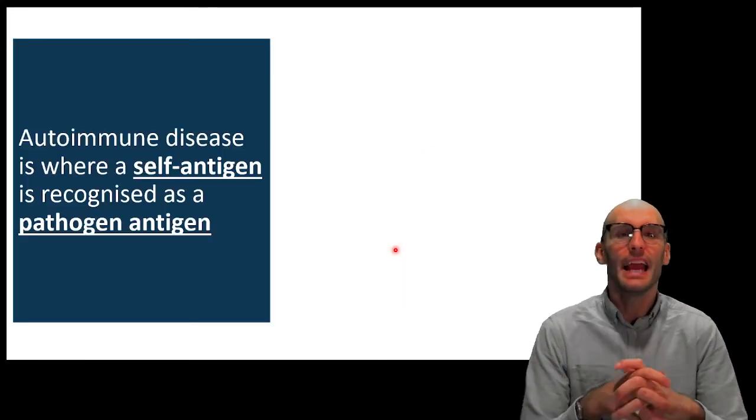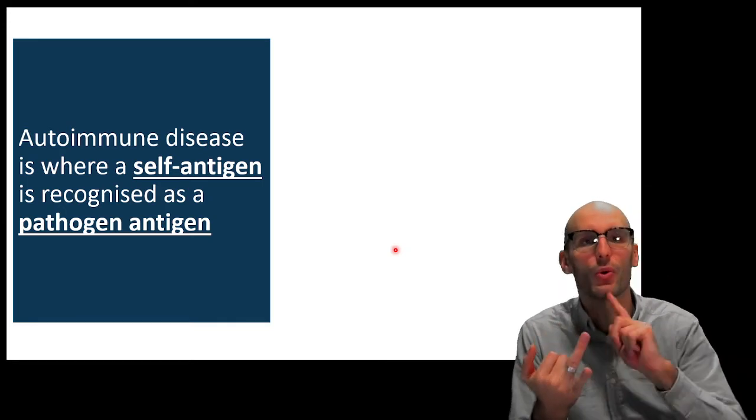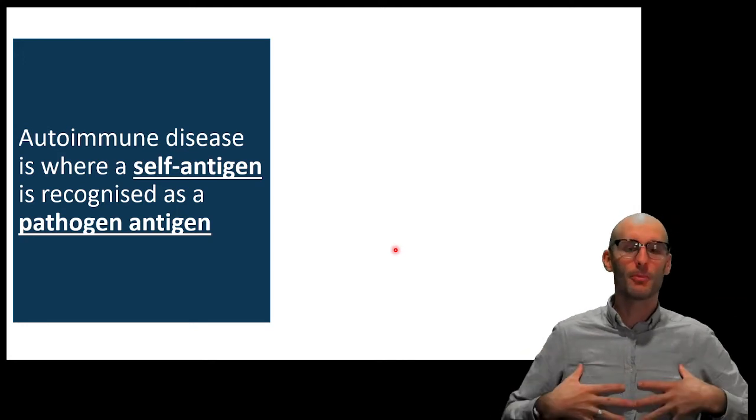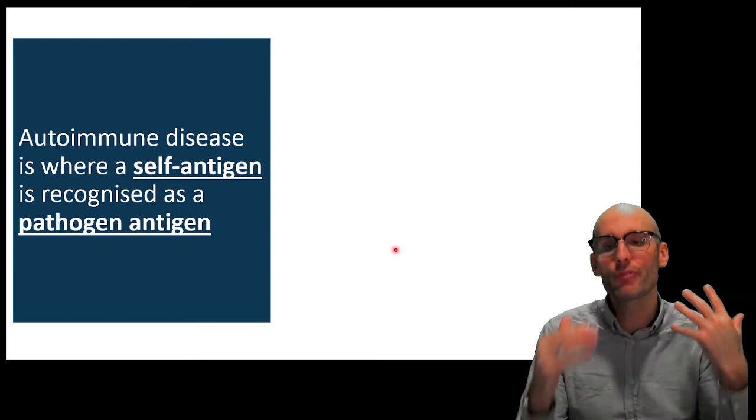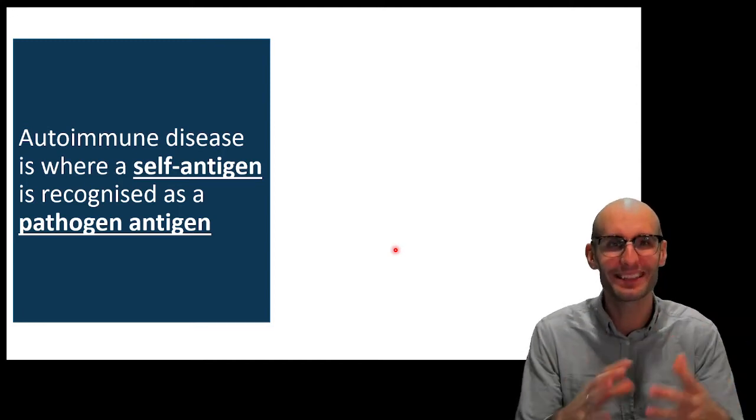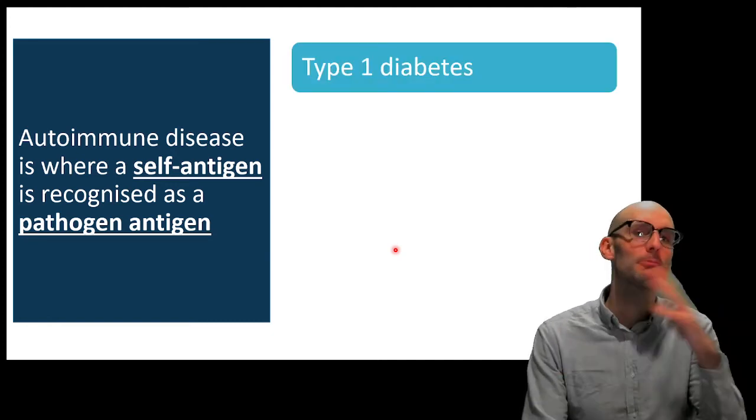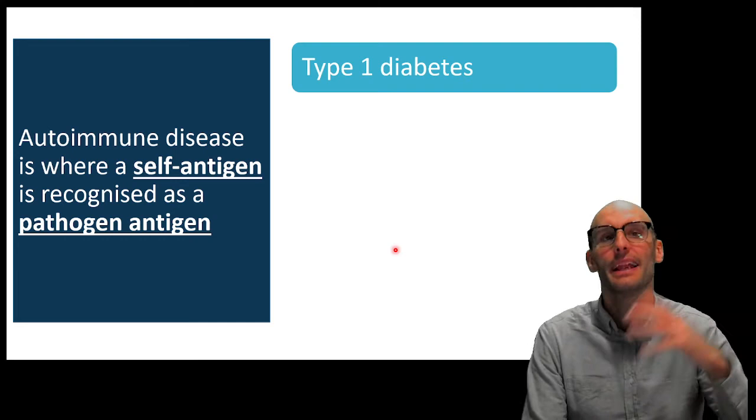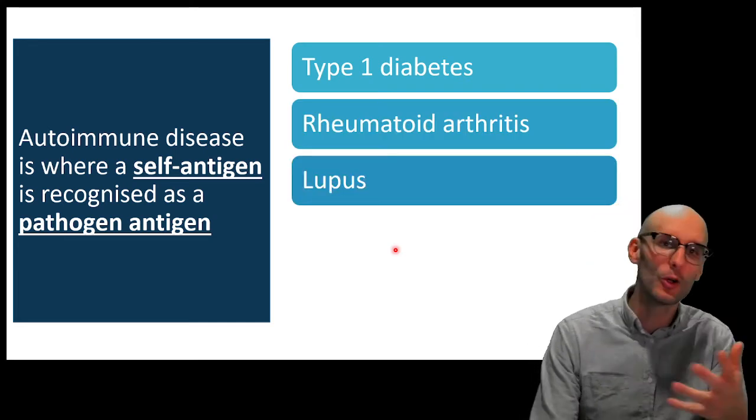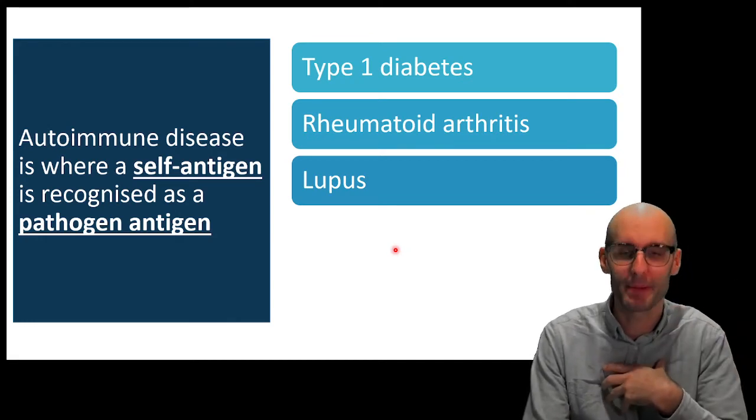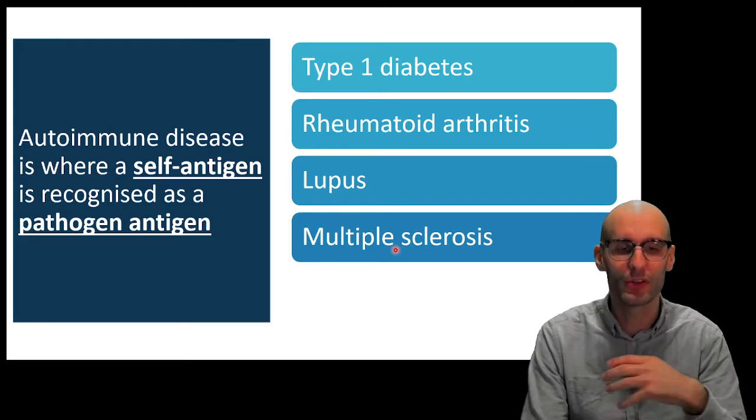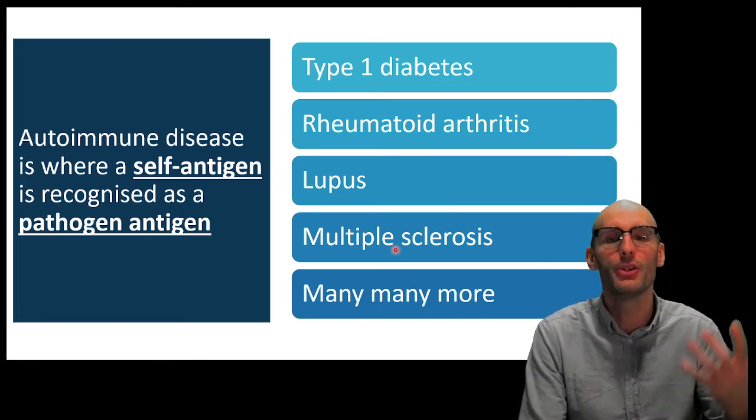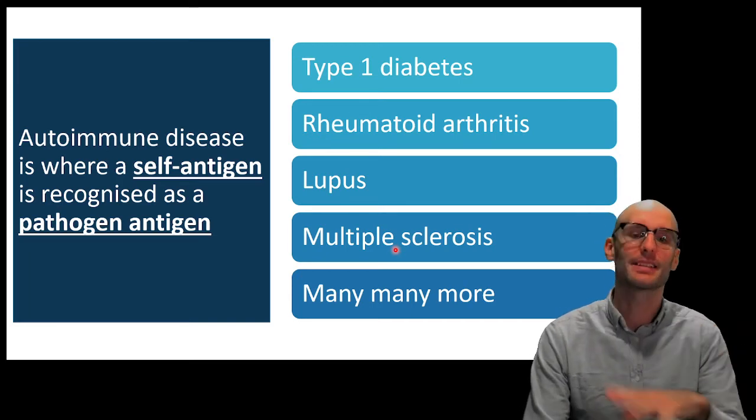So autoimmune disease is where these recognition molecules, the T cell receptor or the antibody or both, recognize a self-antigen. So a protein or a carbohydrate that's produced or another biological molecule that's produced by your own body, and it recognizes it as a pathogen antigen. So it thinks that it is from a pathogen. And there are numerous types and the different types of the disease depend on which part of the body it attacks. So type 1 diabetes it attacks the pancreas. Rheumatoid arthritis it attacks the joints. Lupus it attacks seemingly the whole body in different places depending on the patient. Multiple sclerosis it attacks your neuron, well actually your insulation around your neurons. And there are many many more. Almost if you can think of something in your body there is an autoimmune disease that corresponds to it. So let's look at some of the mechanisms by how this works.